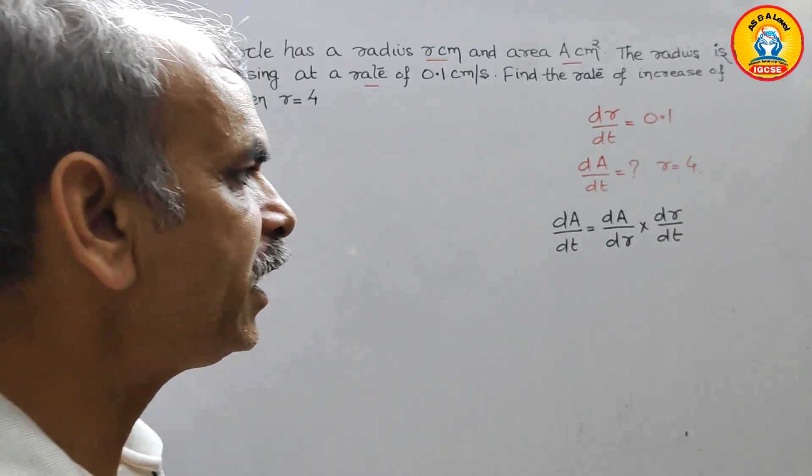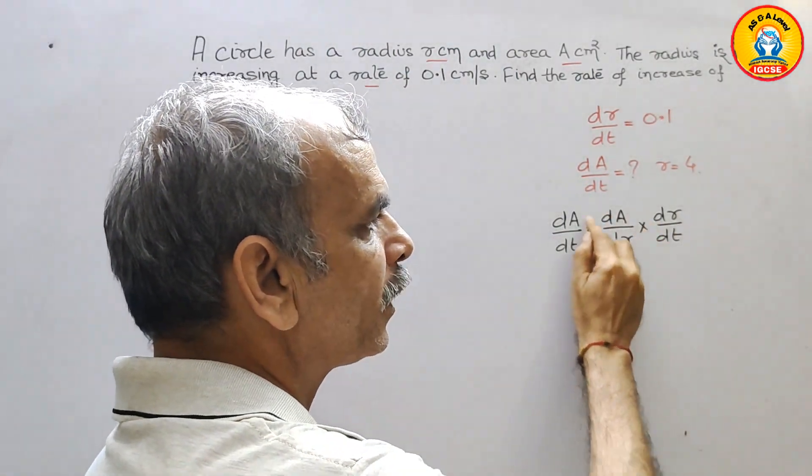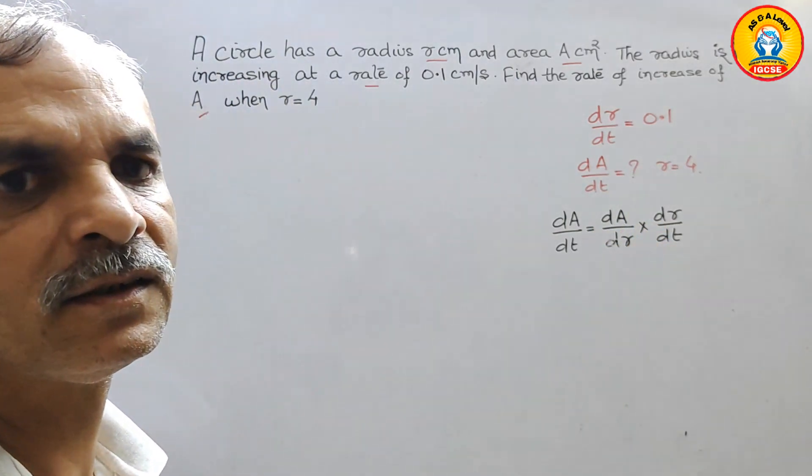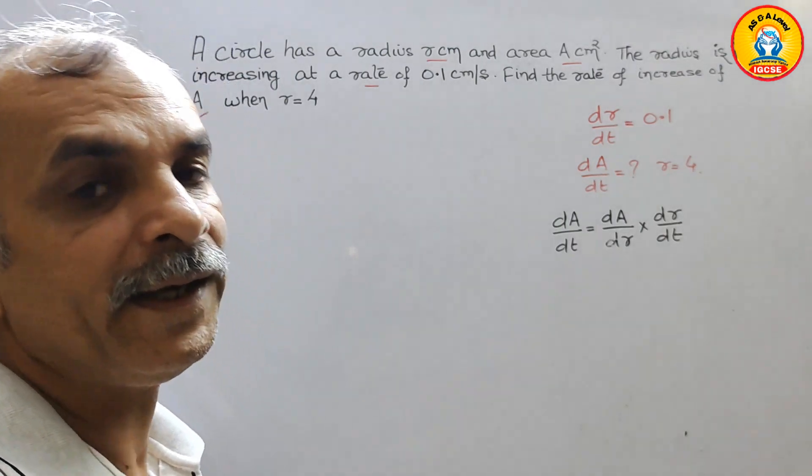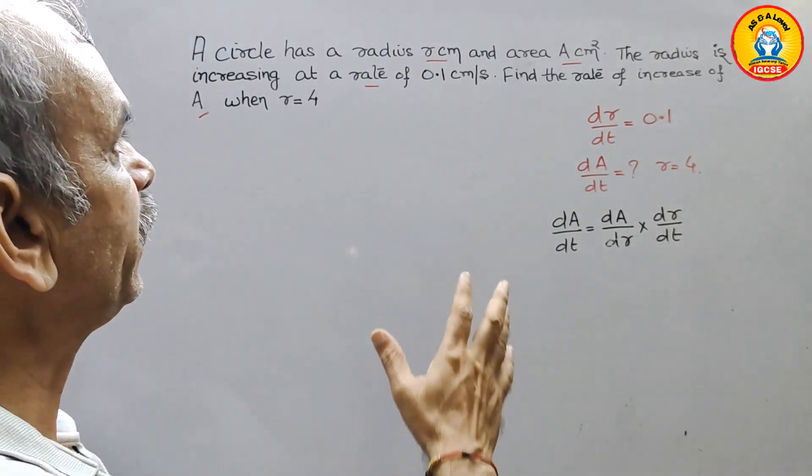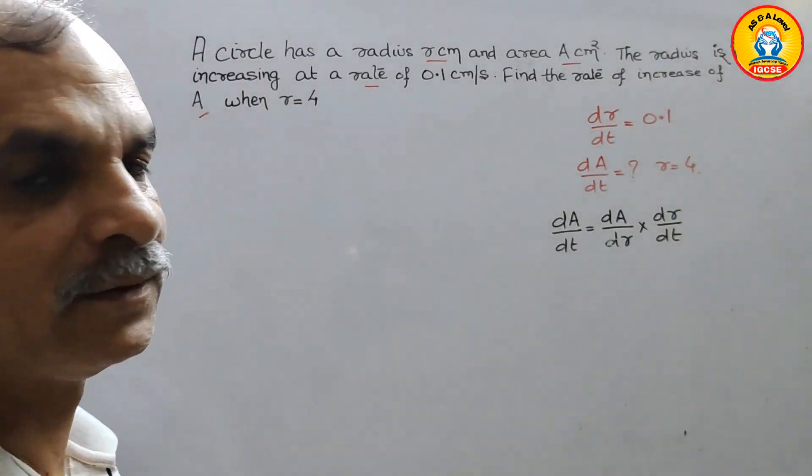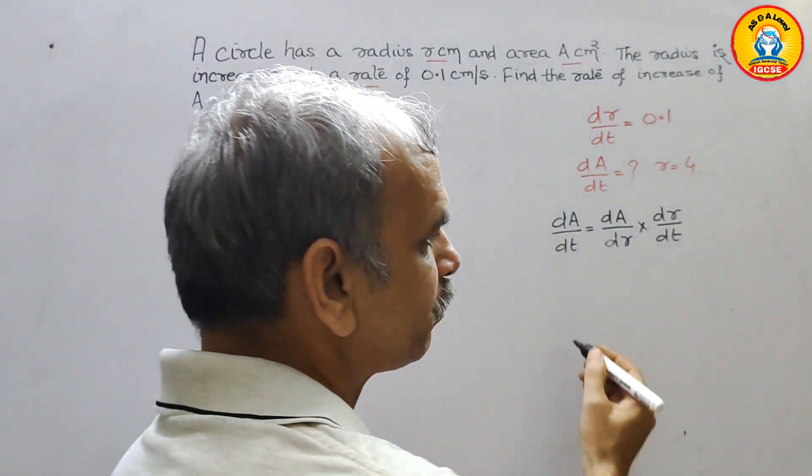That means we have to differentiate what? Area. They have given the circle. The area of a circle is pi r square.